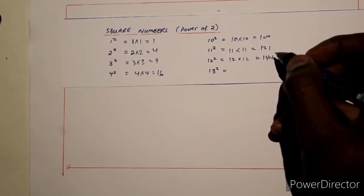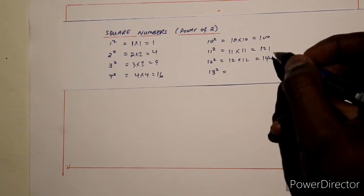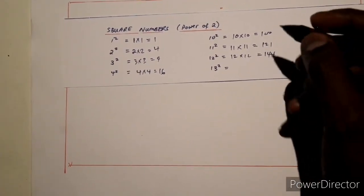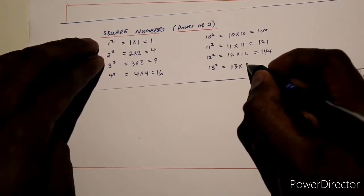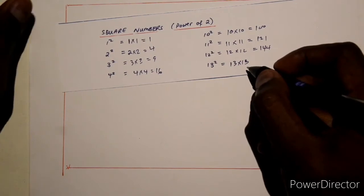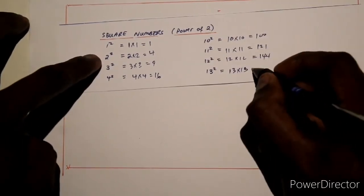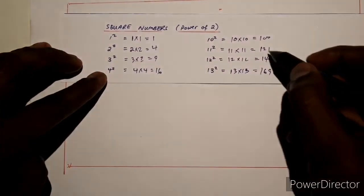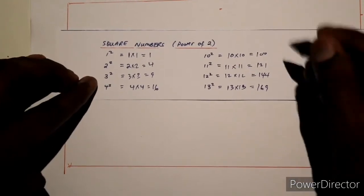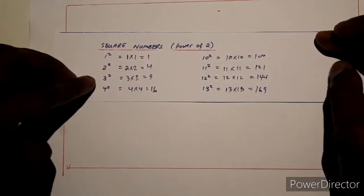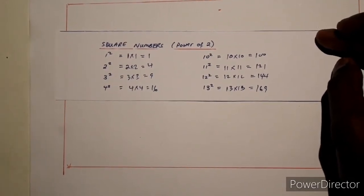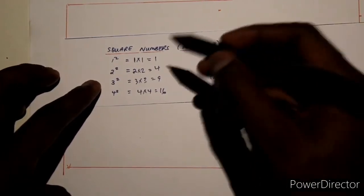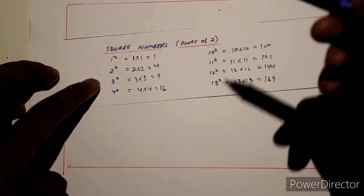And what about 13 times 13? 13 times 13 is 169. So all these numbers — 1, 4, 9, 16, 100, 121, 144, and 169 — are known as square numbers. When a number is multiplied by itself 2 times, the result is a square number. Square numbers are the product of any number raised to the power of 2.